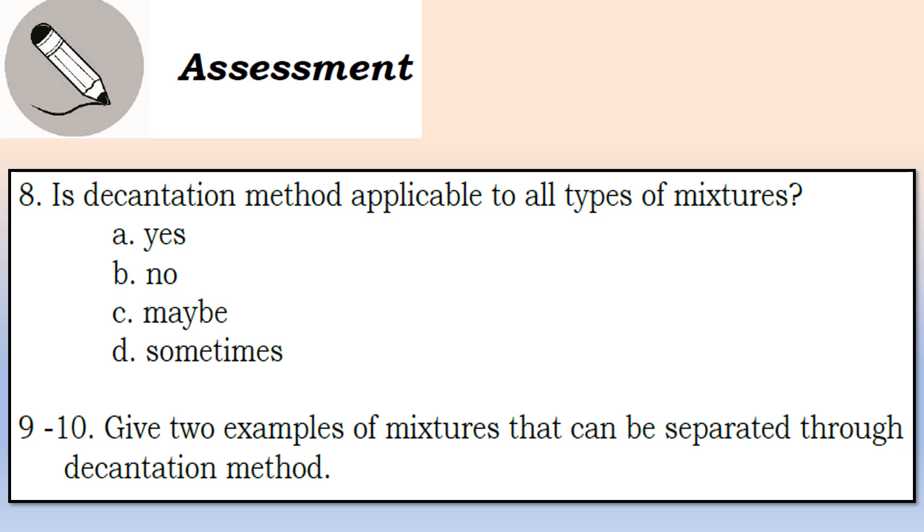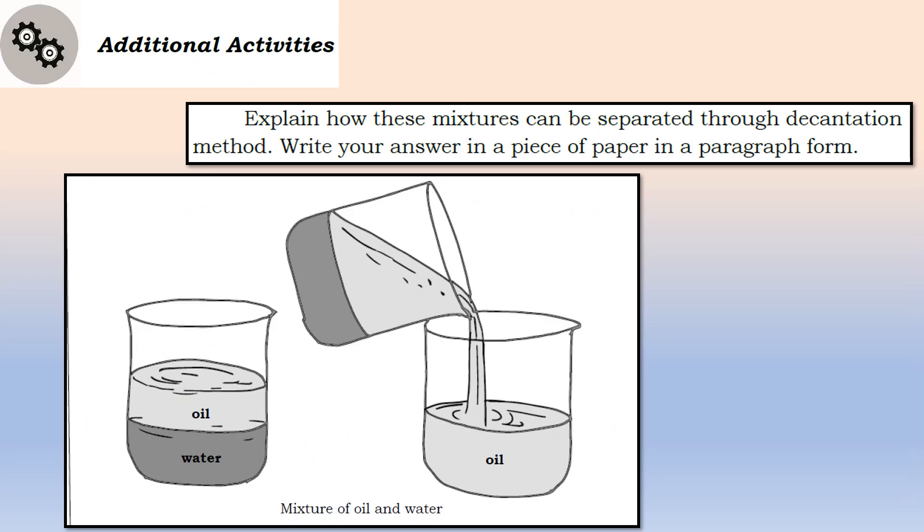For number nine to number ten, magbigay kayo ng dalawang example ng mixtures na pwede natin ma-separate gamit ang decantation method. Para sa inyong karagdagang activity, explain how these mixtures can be separated through decantation method. May nakita tayong mixture dyan, a mixture of oil and water. Ngayon, explain ninyo kung paano natin ito masi-separate gamit ang decantation method.